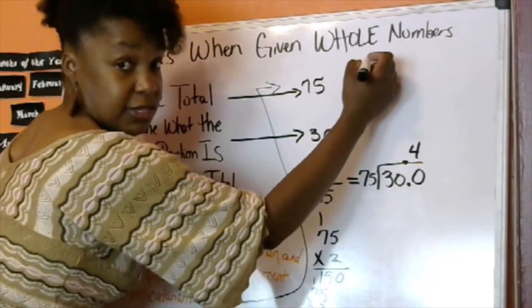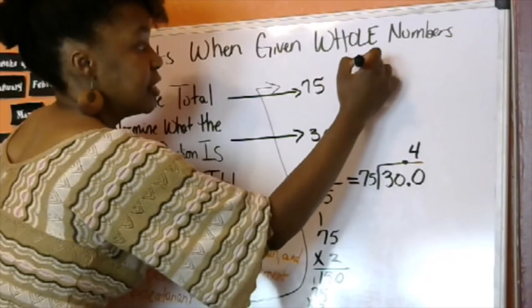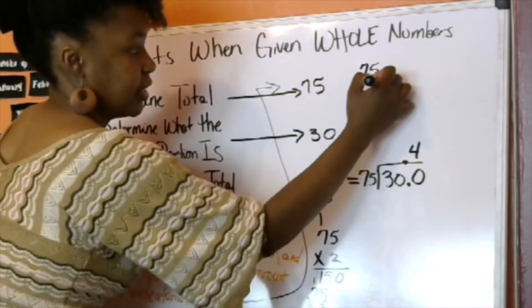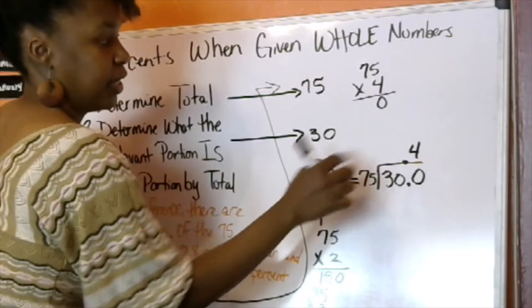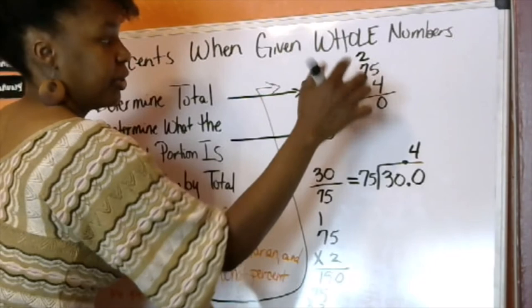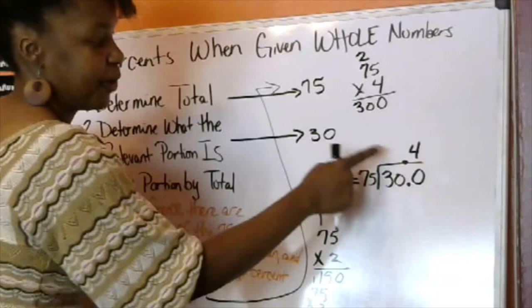Let's see, we need more space. Let's go up top. 75 times 4. 4 times 5, 5 times 4 is 20. Put down our 0, carry the 2. 4 times 7 is 28, plus 2, that gives us 30. And would you look at that, we have 300. I was right, I knew what I was talking about.